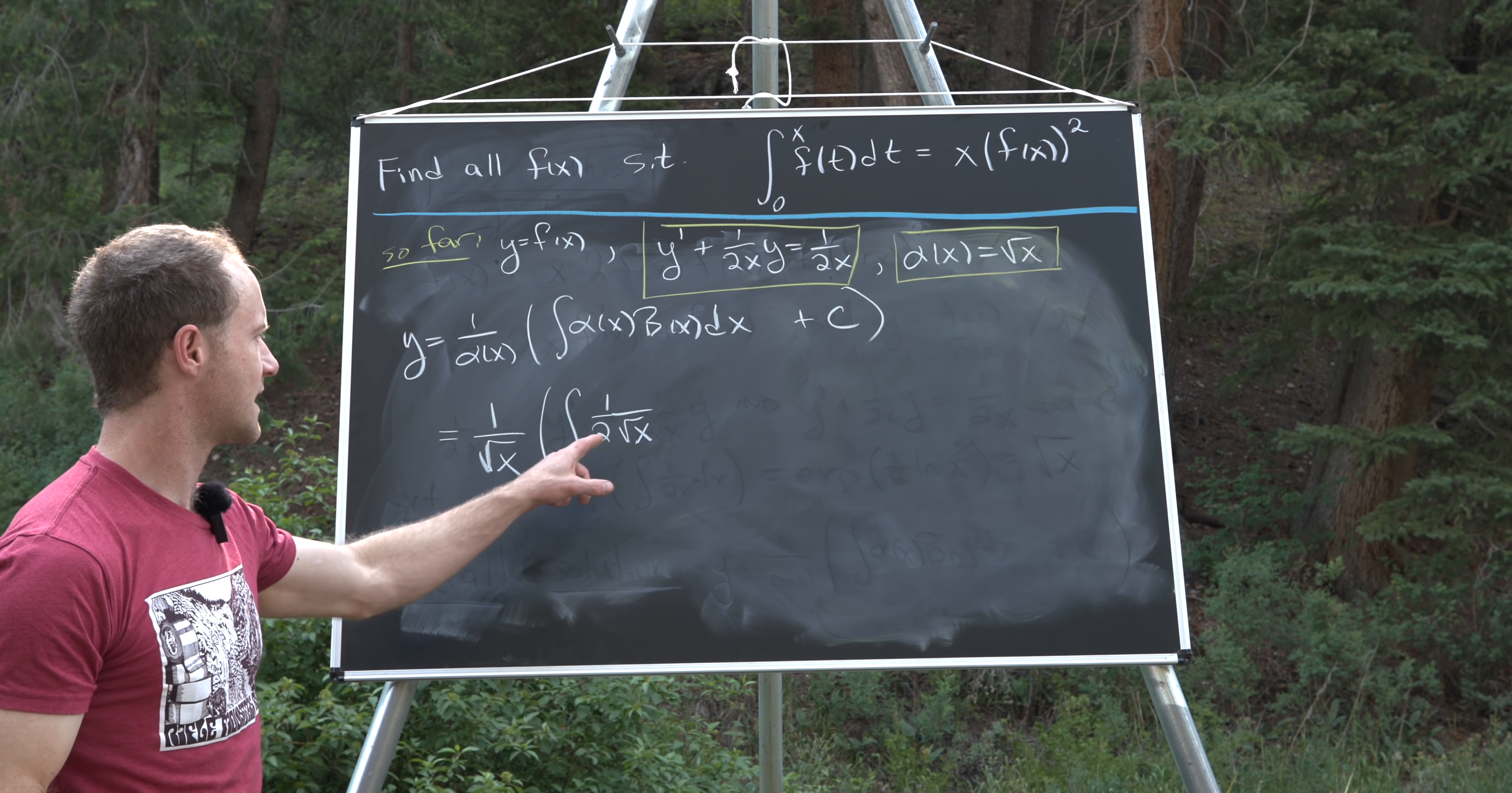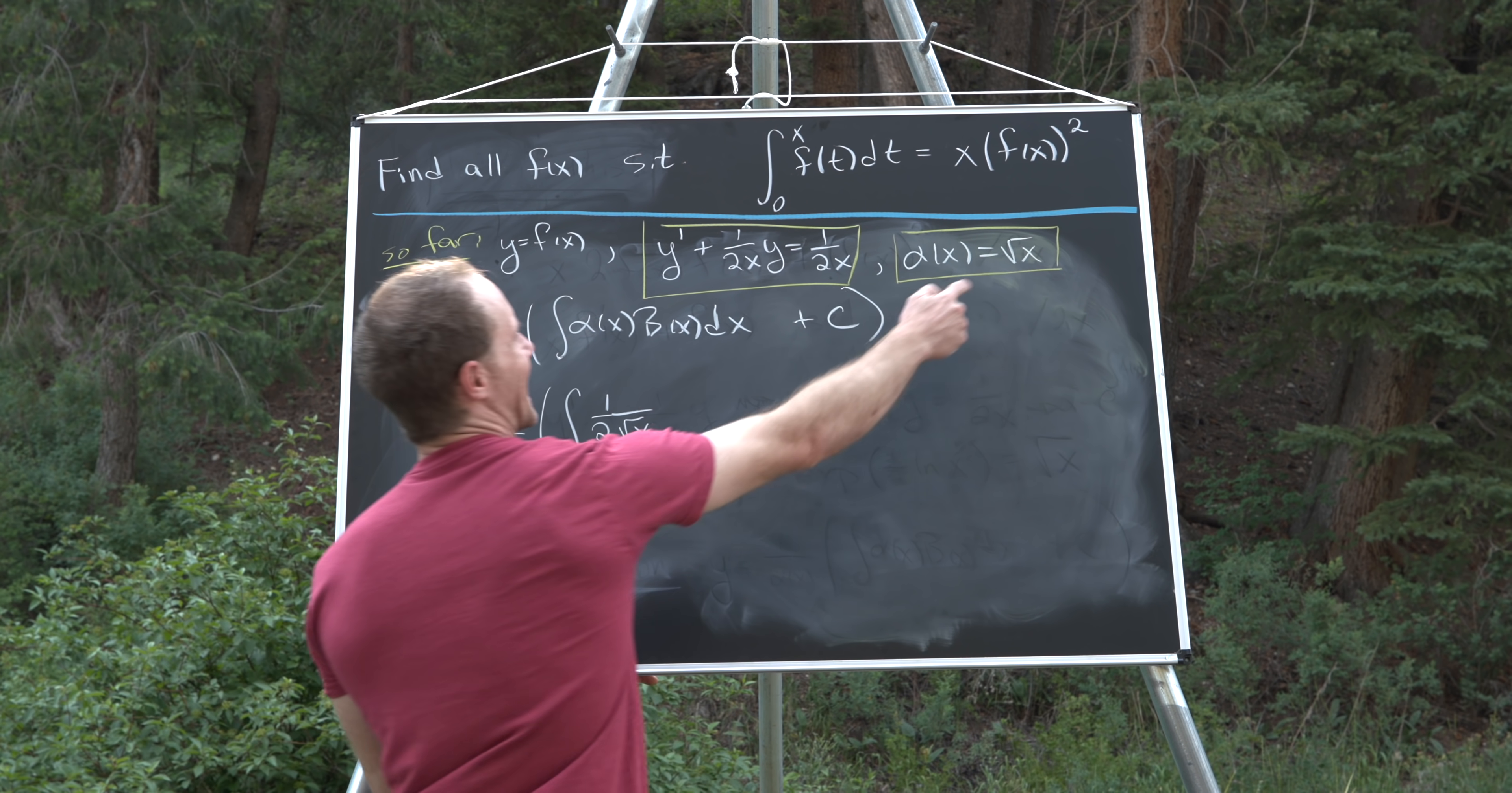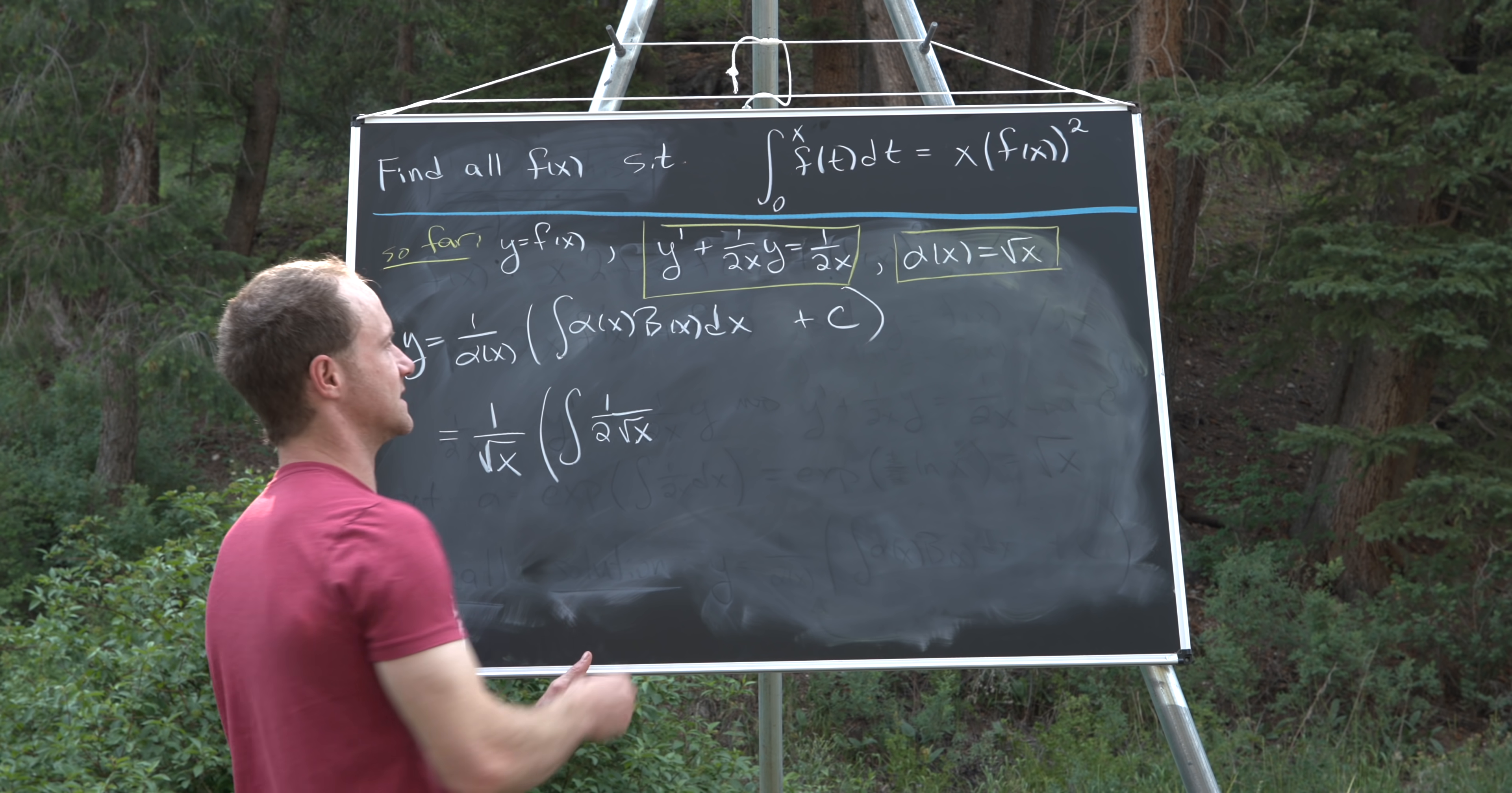Let's maybe talk our way through that. So why do we get a square root of x in the denominator? Well, because we've got alpha times b. So we've got the square root of x over x, but that simplifies down to this.